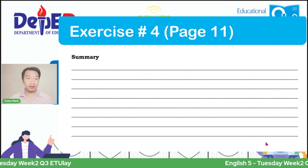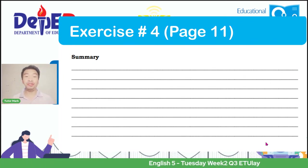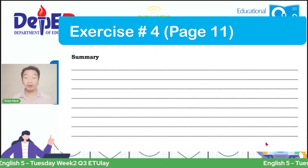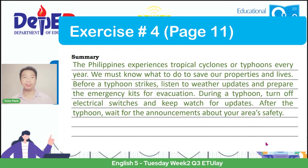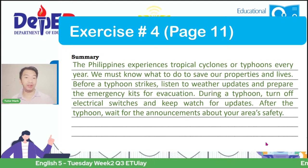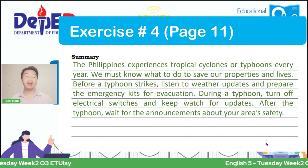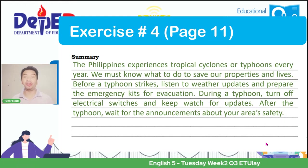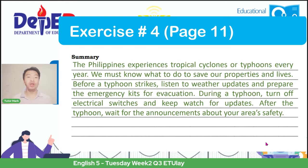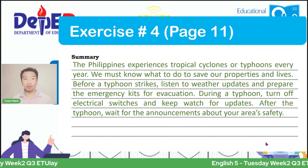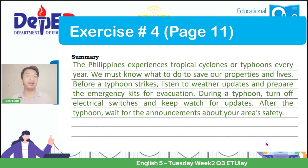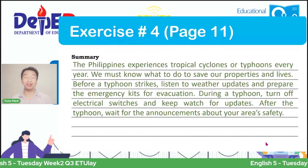And this is a possible answer for page 11 of your self-learning module: 'The Philippines experiences tropical cyclones or typhoons every year. We must know what to do to save our properties and lives. Before a typhoon strikes, listen to weather updates and prepare emergency kits for evacuation. During a typhoon, turn off electrical switches and keep watch for updates. After the typhoon, wait for announcements about your area's safety.' All in all, you have now summarized a very long context.